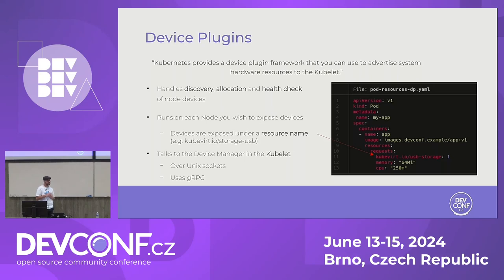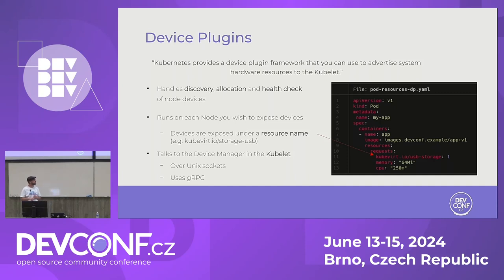For discovery, if you're talking about USB, you would look into USB devices plugged into the node and, based on some factor, choose which ones you want to expose. For allocation, when it's time to create a workload using a device plugin, Kubelet will talk with the device plugin to get the metadata needed — the path of the device and other information. Health check is also important because the device might change states; it might not be available anymore, so the device plugin needs to be aware and keep updating the control plane of Kubernetes.